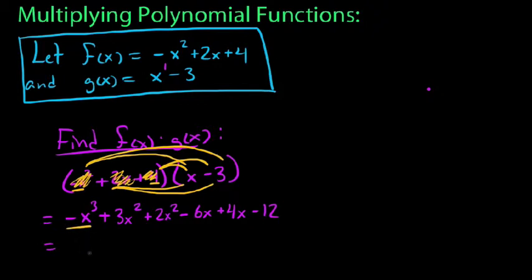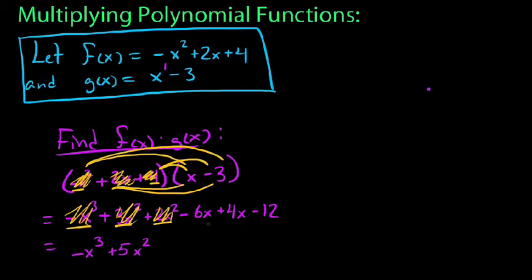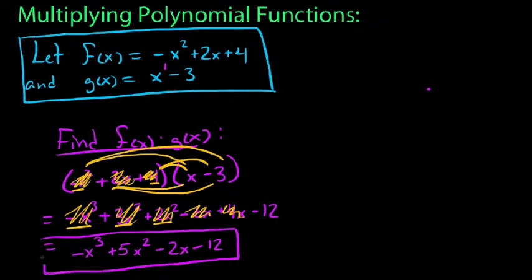We say x cubed — there are no other x cubed terms, so it gets carried down as negative x cubed. For x squared terms, we have 3 of them and 2 of them, for a grand total of 5x squared. For x to the first, negative 6 and positive 4 give us negative 2x. And then negative 12 is our constant. So this third-degree polynomial is the product of our quadratic and linear polynomials.